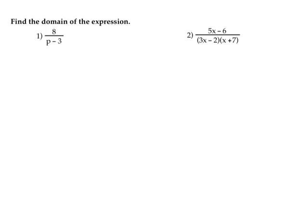In the following examples we're asked to find the domain of the expression. The domain refers to all of the possible x values — or in the first expression, all the possible values we could have for p — so that we have a value that would exist.